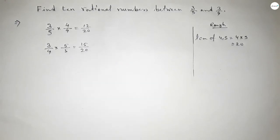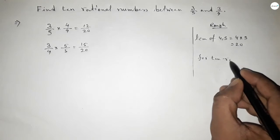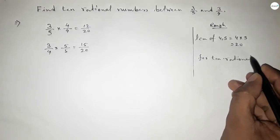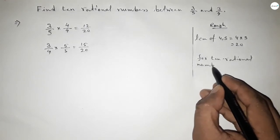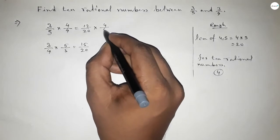Now for this particular sum, we have to find out 10 rational numbers between 3 over 5 and 3 over 4, so we should multiply by 4 with both numbers by this way.